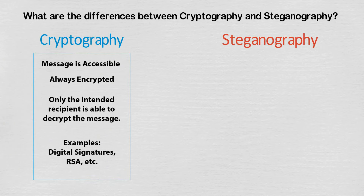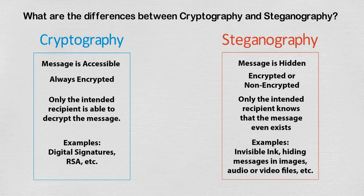In cryptography, it is assumed that the encrypted message is accessible by all, but only the intended recipient should be able to decrypt it. Steganography, on the other hand, focuses on hiding messages in such a way that only the recipient knows the message even exists. These hidden messages can be encrypted or not, depending on the requirement. Steganography thus adds another level of security by hiding the encrypted message.